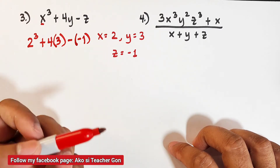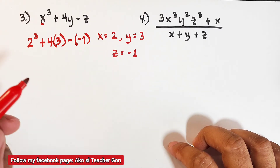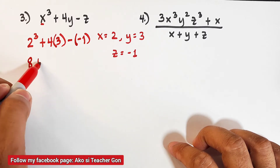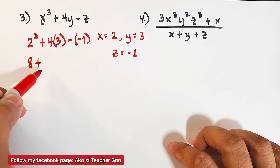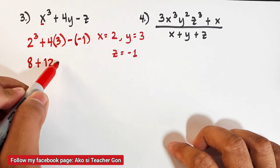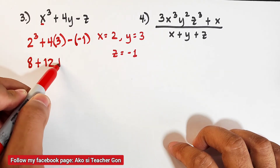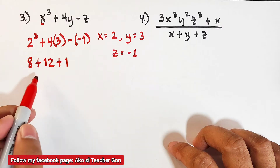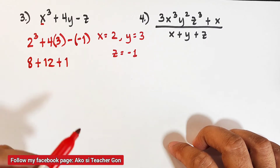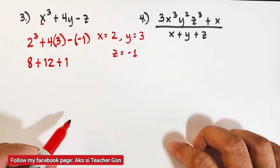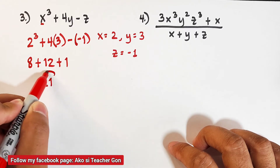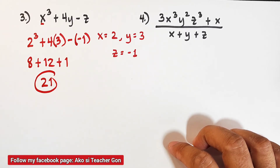Simplifying: 2 cubed is the same as 2 times 2 times 2, which is 8. Plus 4 times 3 is 12. Then negative times negative is positive, so that is plus 1. Adding them all: 8 plus 12 plus 1 equals 21. This is the answer for number 3.